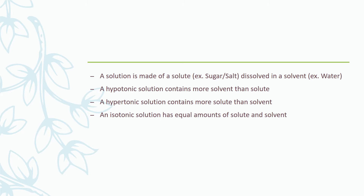A hypotonic solution contains more solvent than solute — this is our really weak Kool-Aid solution where we added only a little bit of drink mix powder. A hypertonic solution contains more solute than solvent — this is our Kool-Aid where we added lots and lots of powder and it's really, really strong. And then an isotonic solution has equal amounts of solute and solvent — this is where we made our Kool-Aid with just the right amount of Kool-Aid powder and water.